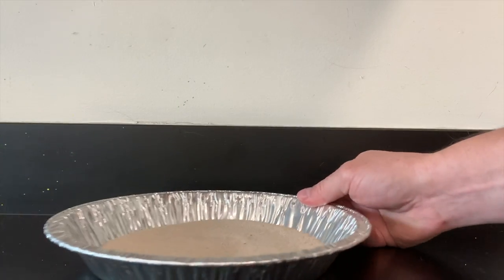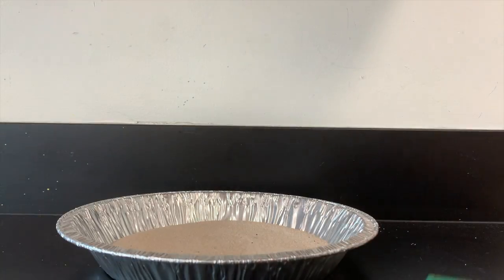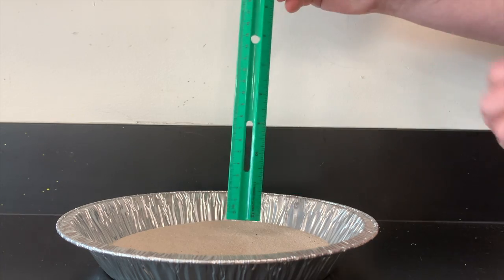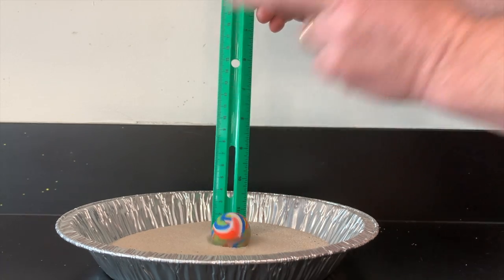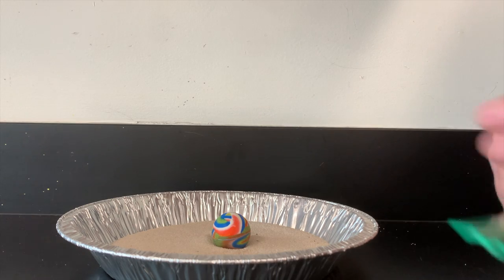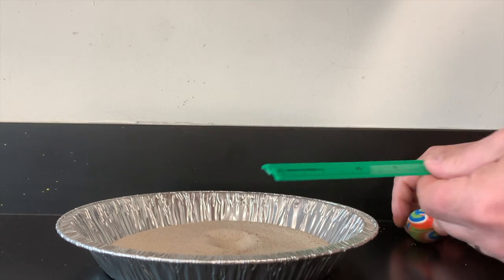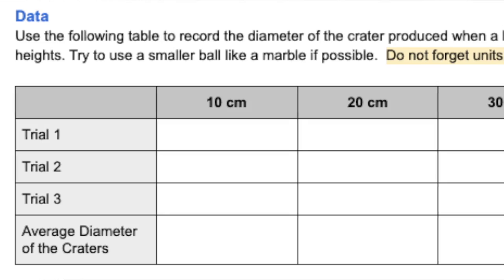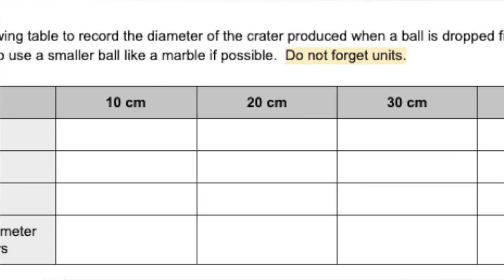Before each trial, make sure that you smooth the sand out so that it's even. Drop the ball from the correct height, the same way each time. Afterwards, you'll measure the diameter across the crater and record that in your data table.